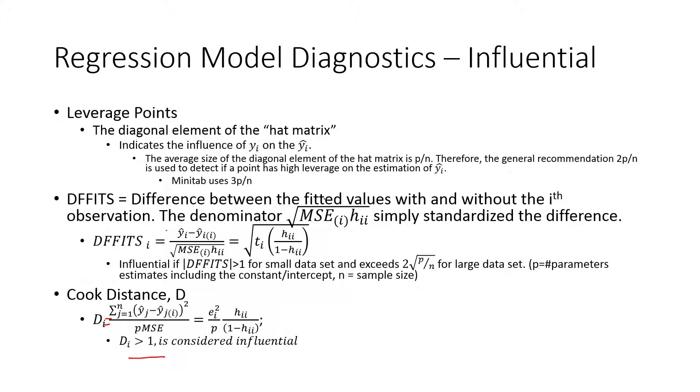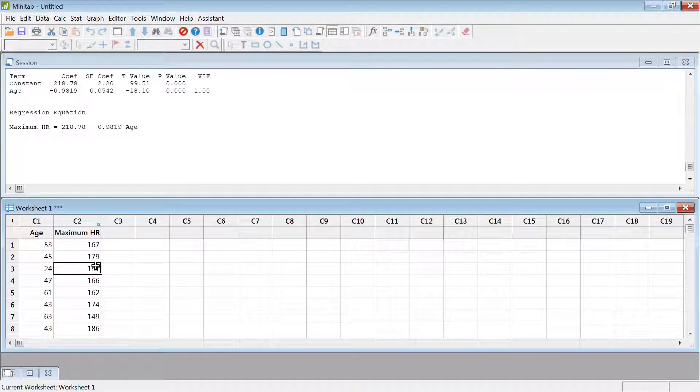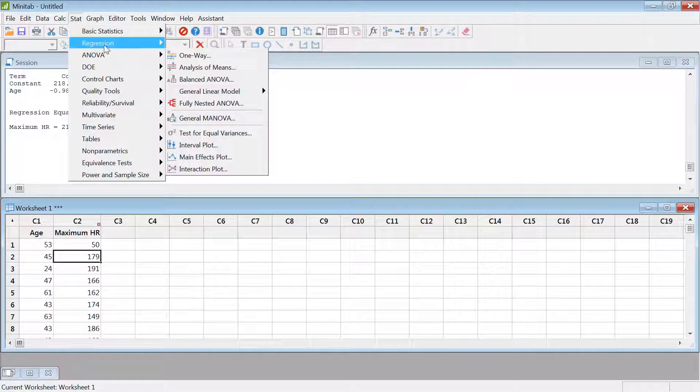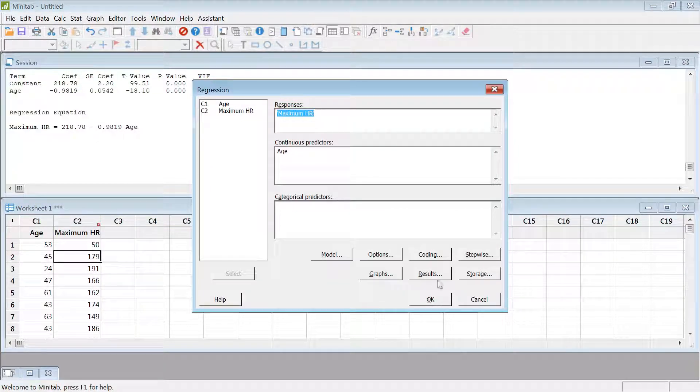Now let's go ahead and run an analysis in Minitab. Here let me change one of these points. Let's make this 50. So I've added one outlier point. Let's go to Stat, Regression, and then Fit Regression Model. Now I'm going to go to the storage section.